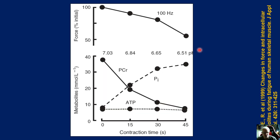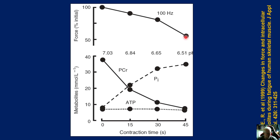Under dynamic conditions, you'll notice the graph looks very similar to the one we saw earlier under isometric conditions. Here we've got our contraction time at 45 seconds, a five-fold increase in stimulation rate — we're now at 100 hertz. As we saw under isometric conditions, you can see a decrease in force generation, so it conforms to our classification of task decline. You can also see that the cell is starting to become more acidic.